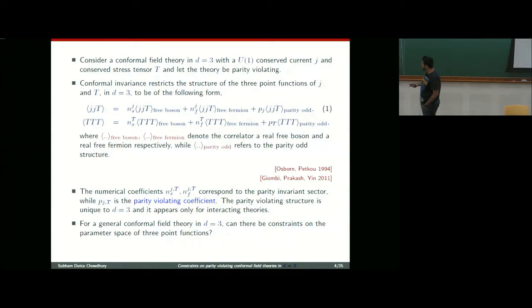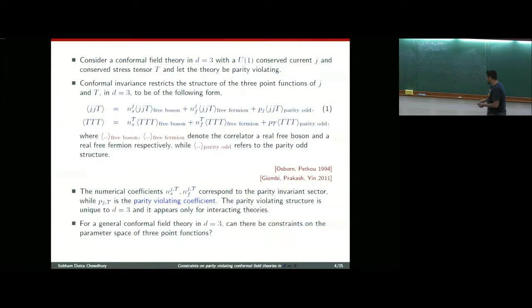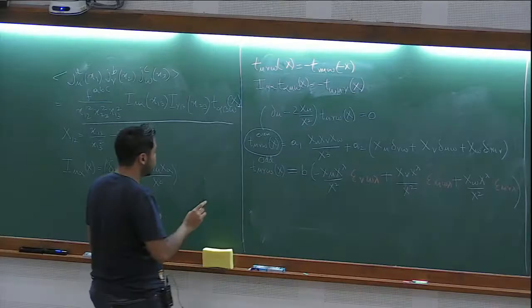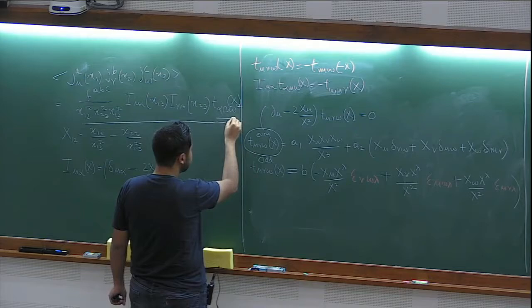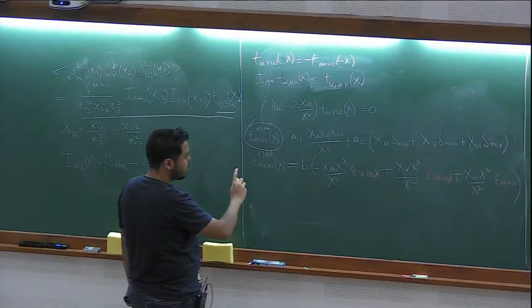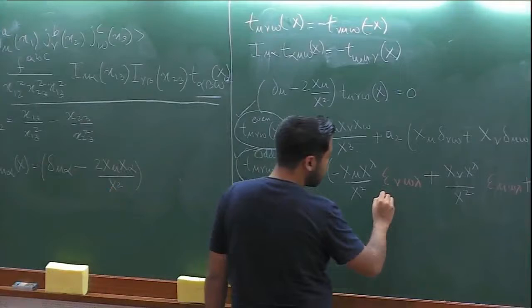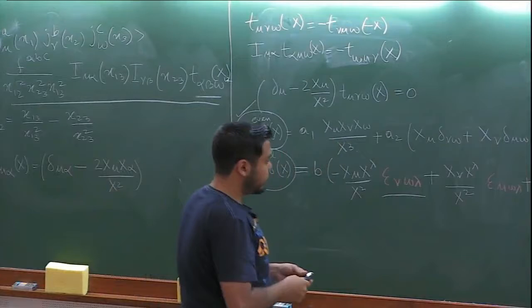The JJT correlator is defined like this. The tensor structure found by Osborne and Petkou is the parity-invariant one. In D equals 3, one can also write down an additional tensor structure which, because of the presence of the epsilon tensor, violates parity. Similar structures can be written down for JJT as well as TTT.